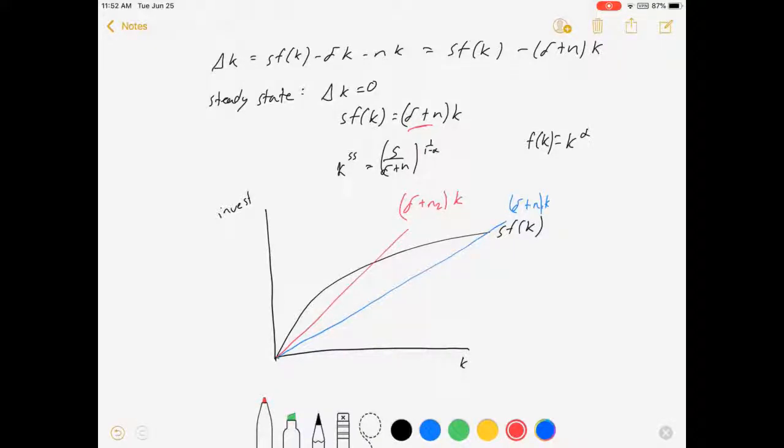Now, the first thing I notice is that the red line is steeper, N2 is greater than N1. N2 being steeper than N1 means N2, that red line shows higher population growth. Now, the next thing I notice is that the population with low population growth, our blue group, has a higher steady state level of capital than our population with high population growth.